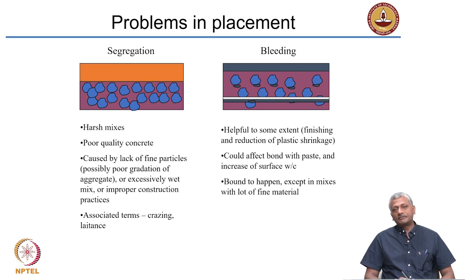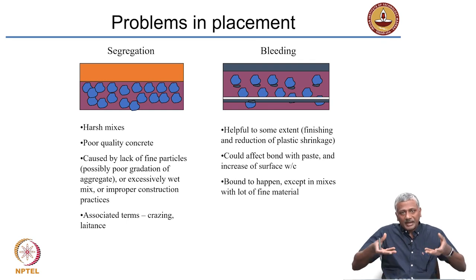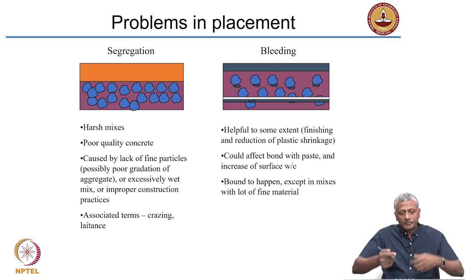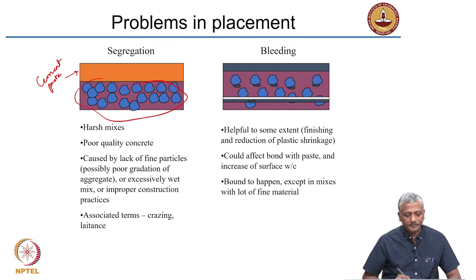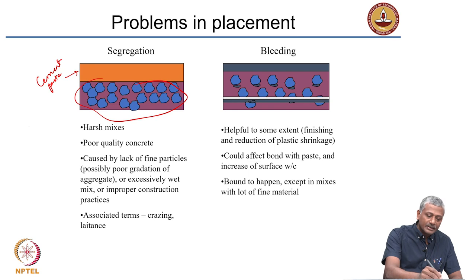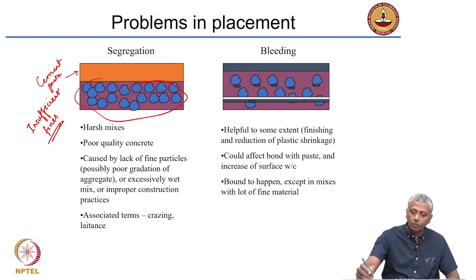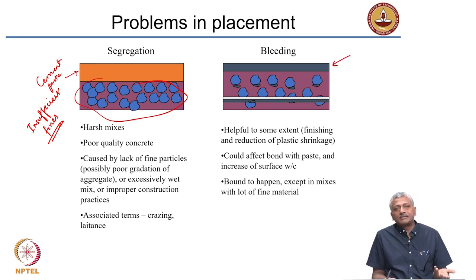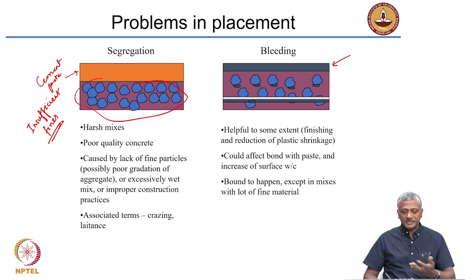If the concrete has not been designed properly, you can get problems like segregation and bleeding during placement. Segregation is caused by the settling of coarser particles downward while lighter or finer particles float on top — typically, cement paste floats on top and aggregate settles at the bottom. This happens when you have insufficient fines in your mix, meaning either the fine aggregate content is low or there is less cement. If you have too much water, you will cause bleeding — water, being the lightest ingredient, rises to the surface and forms a layer due to gravity.